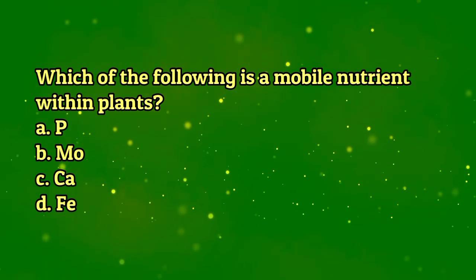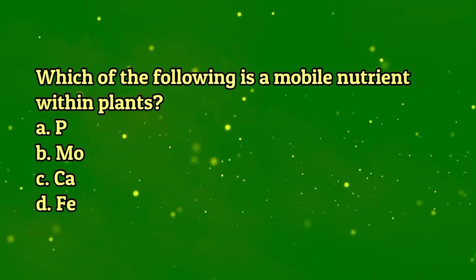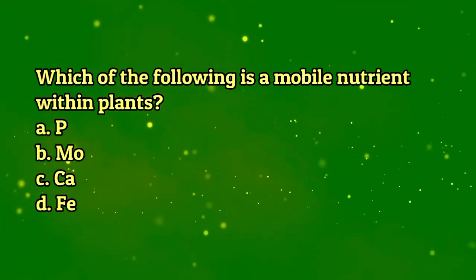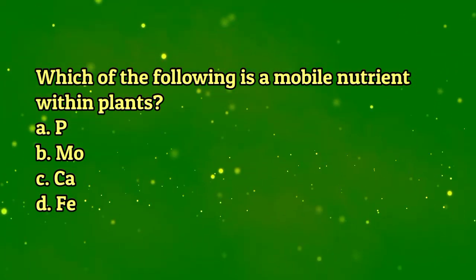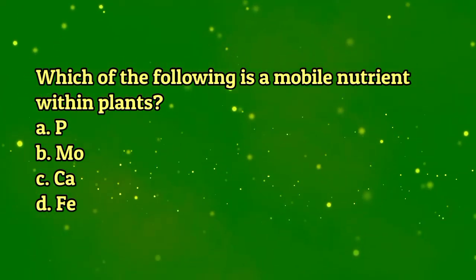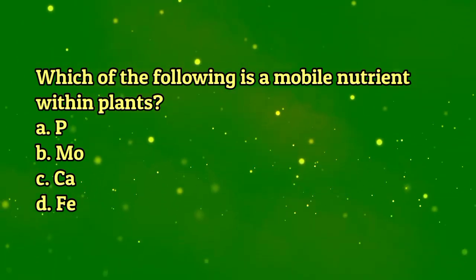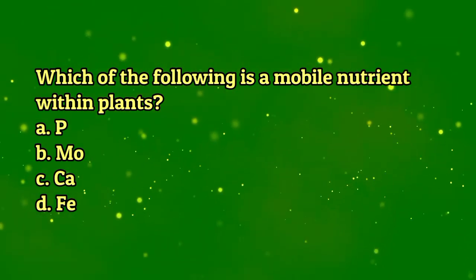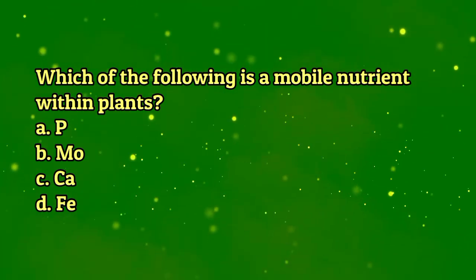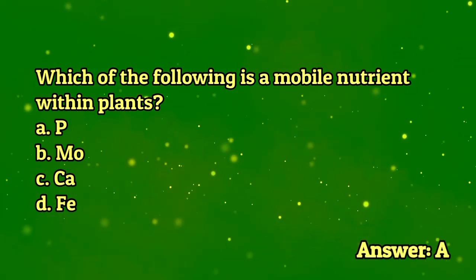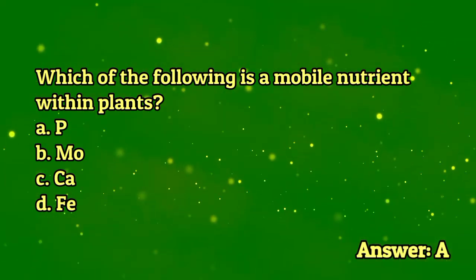Which of the following is a mobile nutrient within plants? A. Phosphorus. B. Molybdenum. C. Calcium. D. Iron. The answer is letter A.